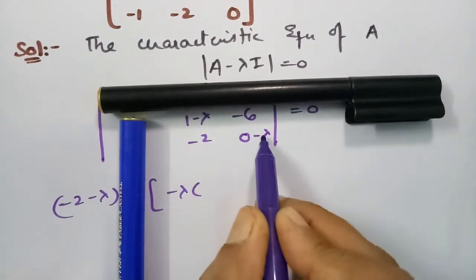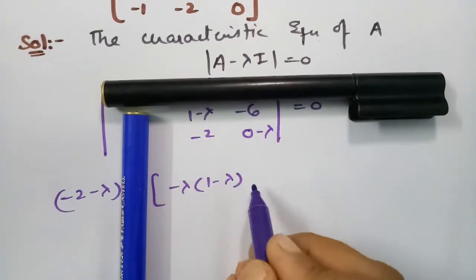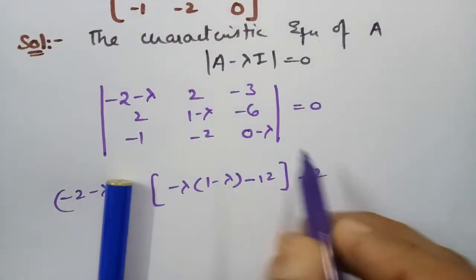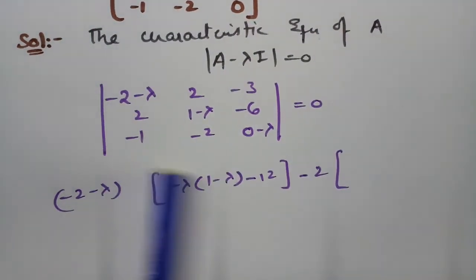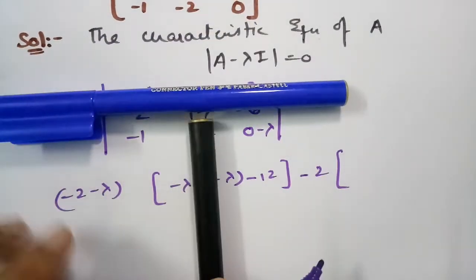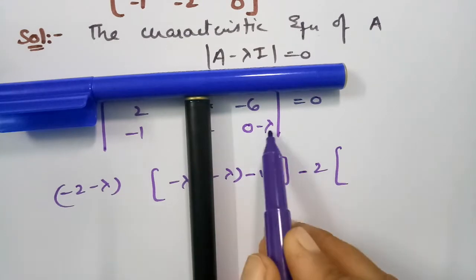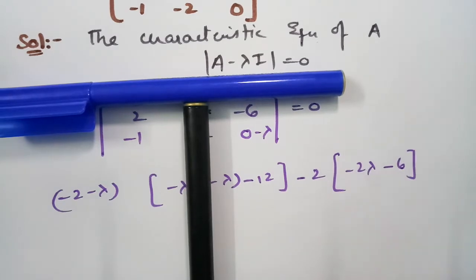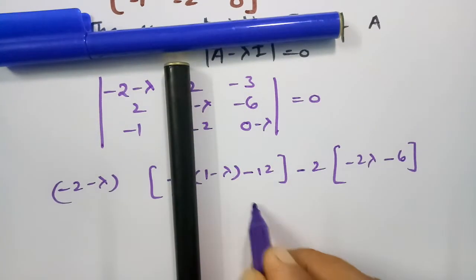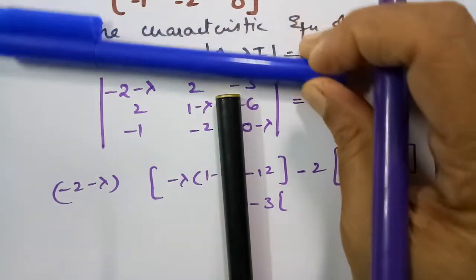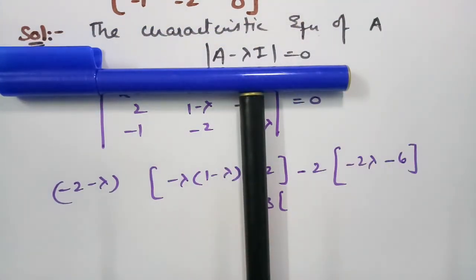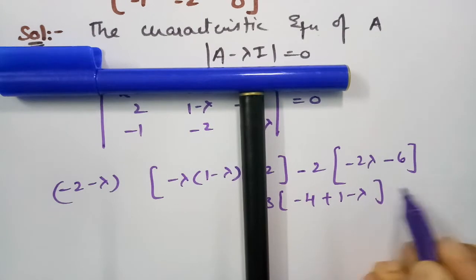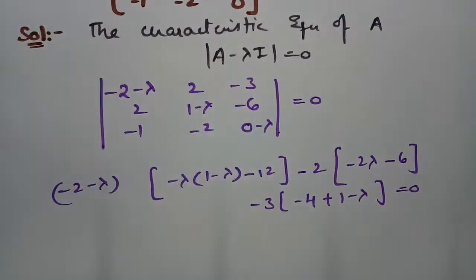Expanding: (−2−λ) times [(−λ)(1−λ) − (−12)], minus 2 times [(2)(−λ) − (−1)(−6)], minus 3 times [(2)(−2) − (1−λ)(−1)] equals 0. This gives us (−2−λ)[(−λ)(1−λ) + 12] minus 2[−2λ + 6] minus 3[−4 + 1 − λ] = 0.